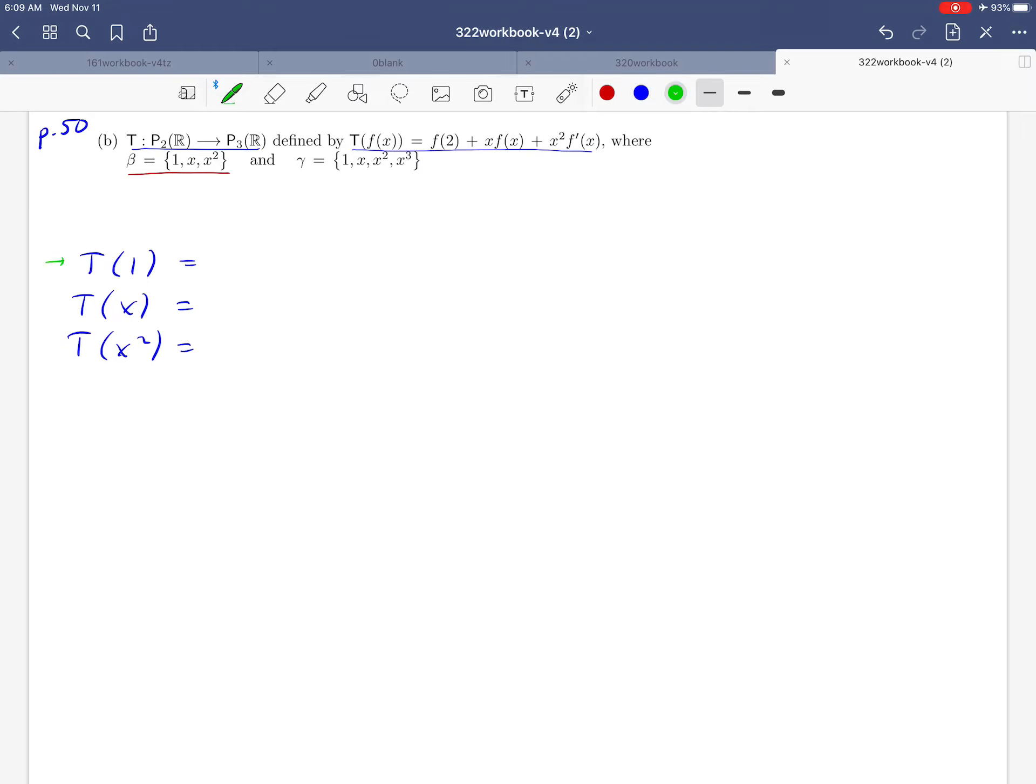If we want to calculate T of 1, we need to use this formula. The first time you see something like this, it might be a little confusing. The formula says we want to take f of 2 plus x times f of x plus x squared times f prime of x. The thing to remember as you're reading through that is that f of x is what's being substituted in here. So to do this first calculation, we're thinking of f of x as being 1. And the first thing that we come to in this formula is they'd like us to write down f of 2. So here's my question to you. If f of x is equal to 1,